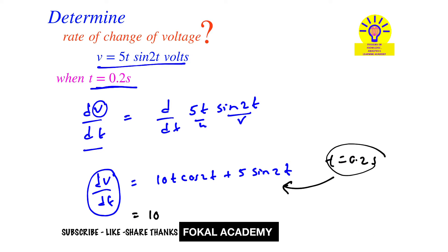Then we get 10 × 0.2 × cos(2 × 0.2), which means cos(0.4), plus 5 × sin(0.4). That equals dv/dt equals 2 × 0.92106.